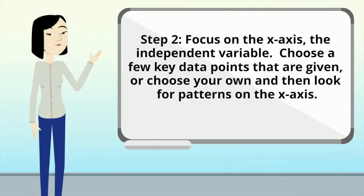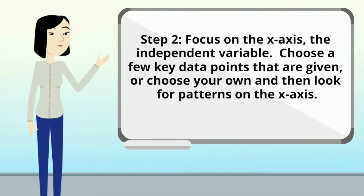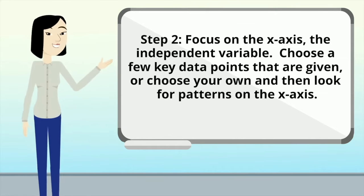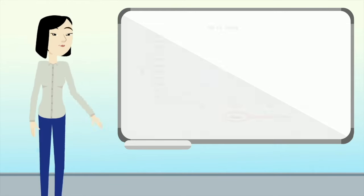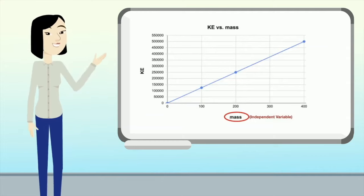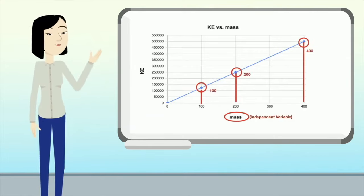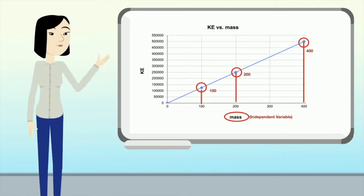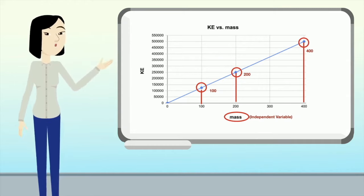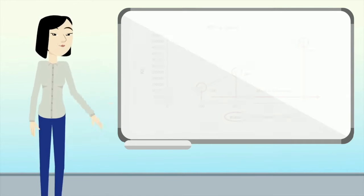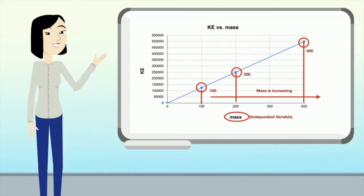In step two, you want to focus on the x-axis, the independent variable. Choose a few given key data points, or you can choose your own, and then look for patterns on the x-axis. Looking at mass, we have a few data points: the first is at 100, the second at 200, and the third at 400. The numbers are going up, which means that mass is increasing.